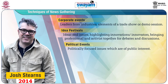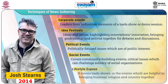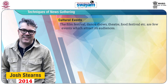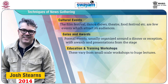Number three is political events, putting particular focus on politically focused issues. Number four, social events, which covers community building events. Number five, lifestyle expos — it covers trade shows or events helpful in bringing business, religion and country together. Number six, cultural events — rejoice with cultural energy and community passion. It is a powerful tool for media in creating unity in society. Number seven, galas and awards. Number eight, education and training workshops — these events are the prime interest for young population and fit very well with the mission and goal of many news organizations.